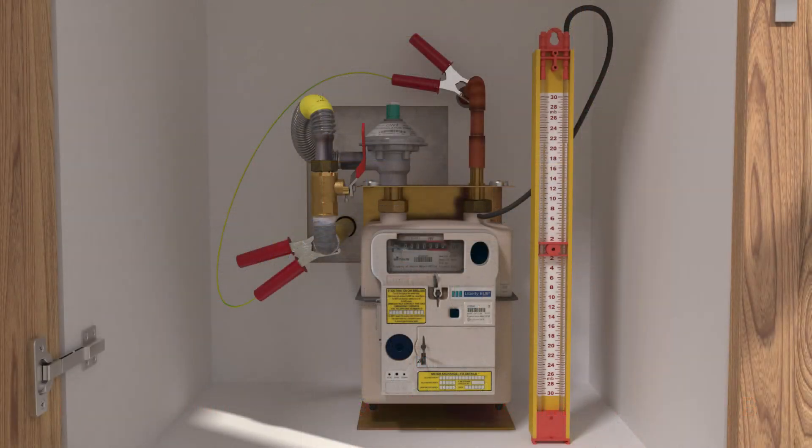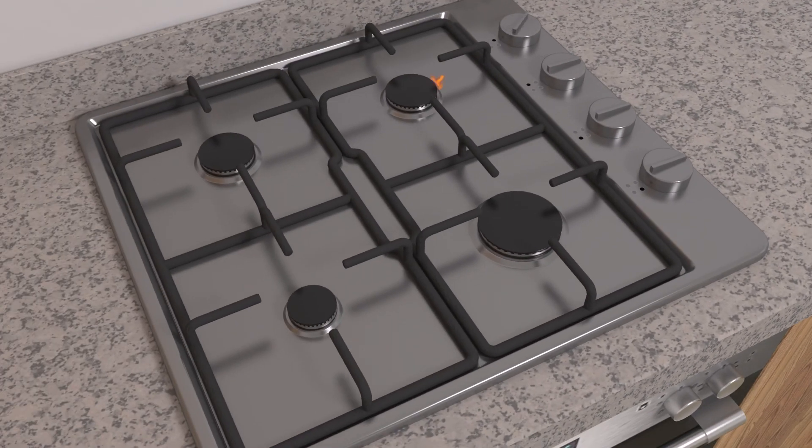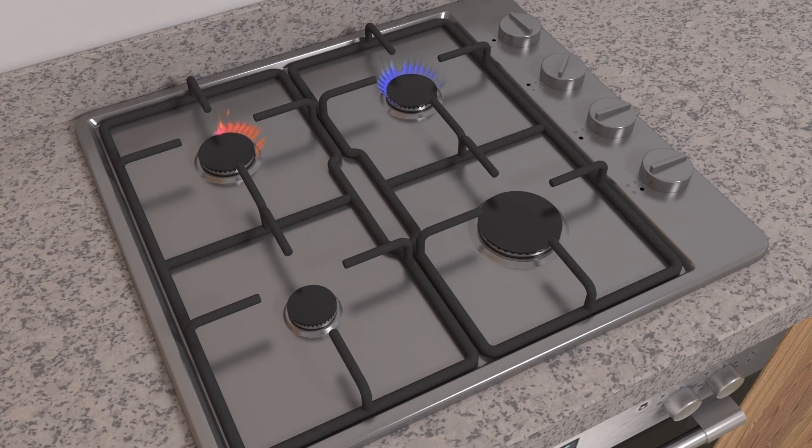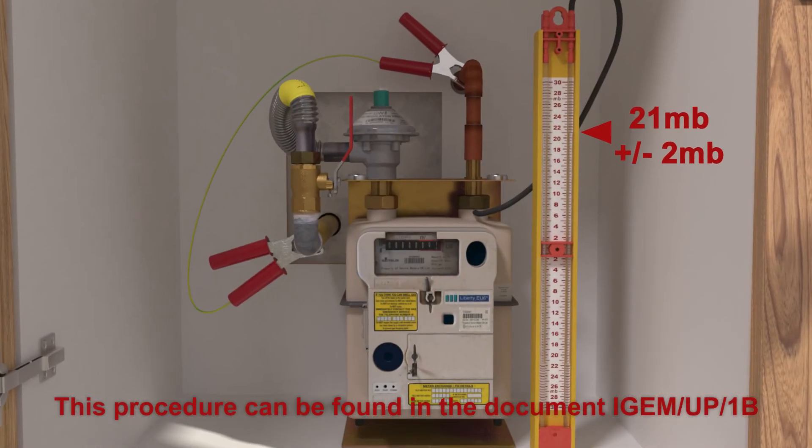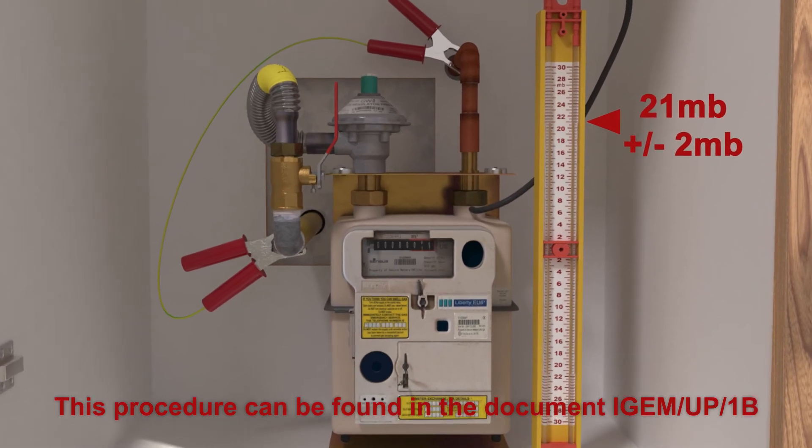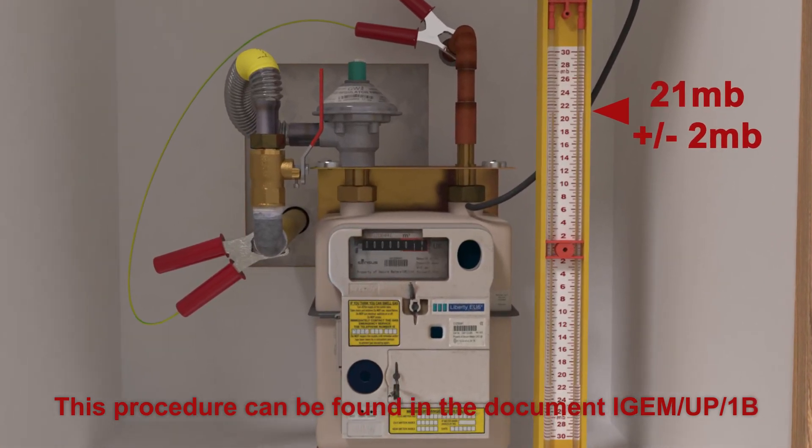Slowly turn the ECV into the on position. Purge out any air from the installation at the appliance and check the working pressure at the meter while the appliance is in use. The working pressure should be 21 millibar plus or minus 2 millibar.